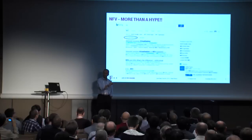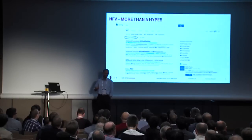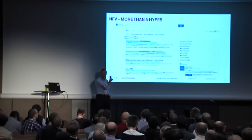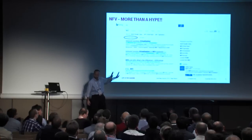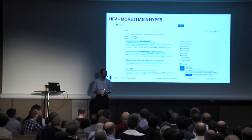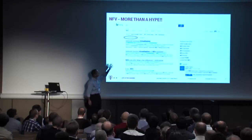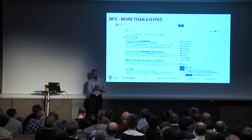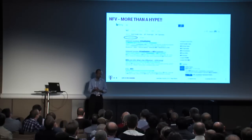I have to admit it took a lot of work to convince my browser not to show the Norddeutsche Fußballverband — the Northern German Soccer Association — at the first results. There may be a lot of unrelated topics, but whether it's 1.3 million or 1.2 or 1.1 million, there's a lot of things going on in network function virtualization. My statement is: it's more than a hype.